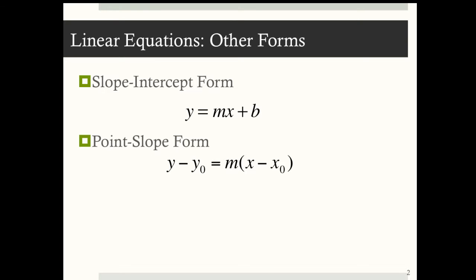But sometimes you'll come across other forms of linear equations, the point-slope form, which is y minus y sub 0 equals m times x minus x sub 0, and that y sub 0 and x sub 0 are given coordinates, a given ordered pair, m is still the slope.